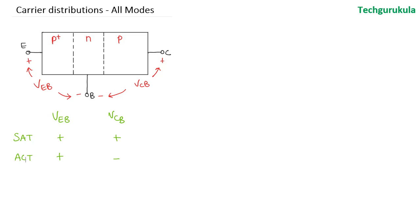And if VEB is negative and VCB is positive, we said this is the inverse active region of operation. And when both the potentials VEB and VCB are negative, this we said is cutoff.